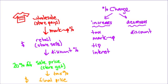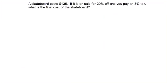And so what we're going to do is we are going to look at an example of putting all of these different things together. So the example here is a skateboard costs $135. That's the retail price, but it's now on sale for 20% off. So we have a discount here, and discounts are decreases. And you are going to pay an 8% tax, so there's going to be an increase at the end. So the question is, what's the final cost of the skateboard?